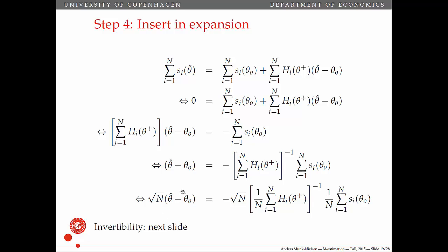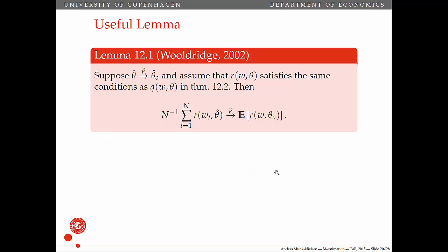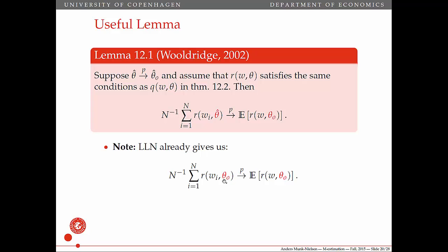So you can see this is starting to look like what we're gunning for in the proof. We needed that invertibility of this sum of matrices. It turns out there's a useful lemma in Wooldridge. If we assume that r follows all the same conditions as our q function does, then Lemma 12.1 from Wooldridge tells us that the average of these functions converges to the expectation — but note that it says theta hat here and theta naught here. The law of large numbers tells us that if we were to evaluate at theta naught on both sides, these things do in fact converge. This lemma is telling us that even if we're evaluating at something that's not theta naught, if this thing converges in probability to that thing, then we haven't broken this convergence.